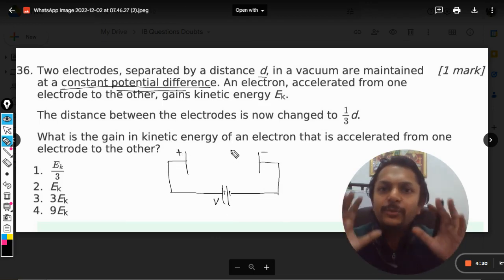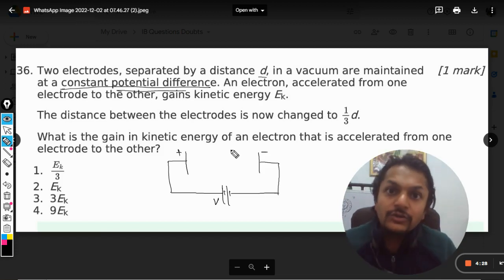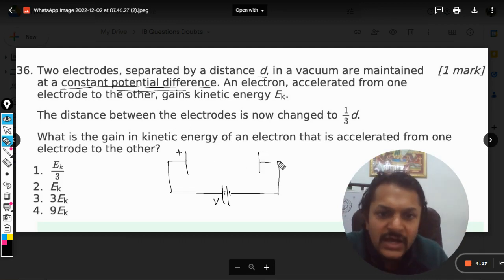The potential difference is constant. Now the very purpose of the cell is to maintain the potential difference, so when it says that a constant potential difference exists, it means that plates are connected with the battery.